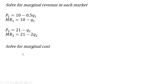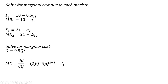Now we're going to solve for marginal cost. Taking the derivative of the cost equation with respect to Q, the quantity of output, we just get Q. The exponent on Q comes down in front, so 2 times 0.5 is just 1, and we subtract 1 from that exponent, leaving us with Q raised to the power of 1, or just Q. Since Q is the output sold in market one plus output sold in market two, we can make a substitution: marginal cost is just Q subscript one plus Q subscript two.